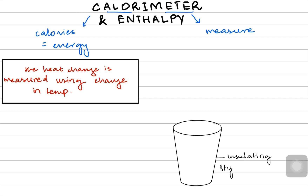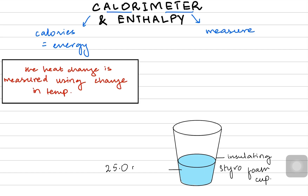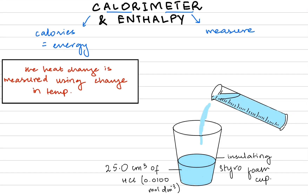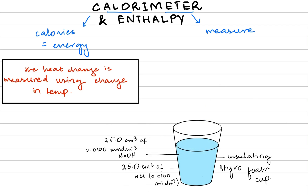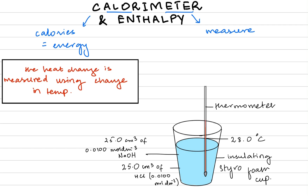Imagine an insulating styrofoam cup. We are going to add 25.0 cm³ of 0.0100 mol/dm³ HCl. Then we add 25.0 cm³ of 0.0100 mol/dm³ sodium hydroxide. Following the temperature with a thermometer, the initial temperature was 28°C and as the alkali was added the temperature increased, with the final temperature recorded as 36.5°C hypothetically.